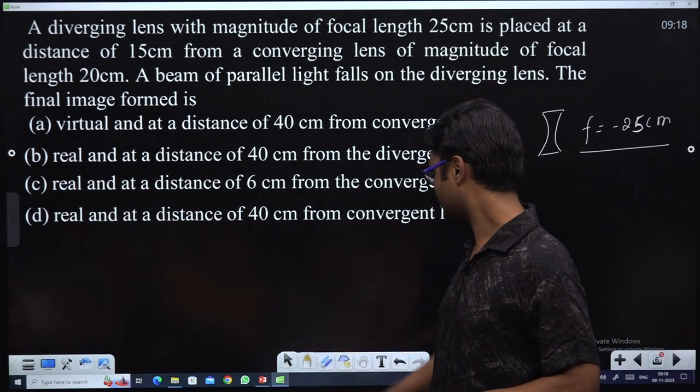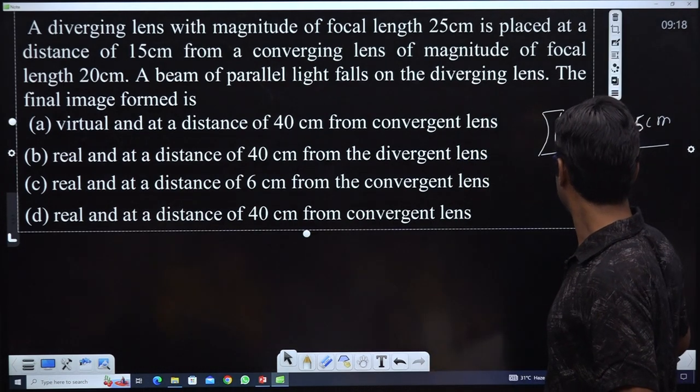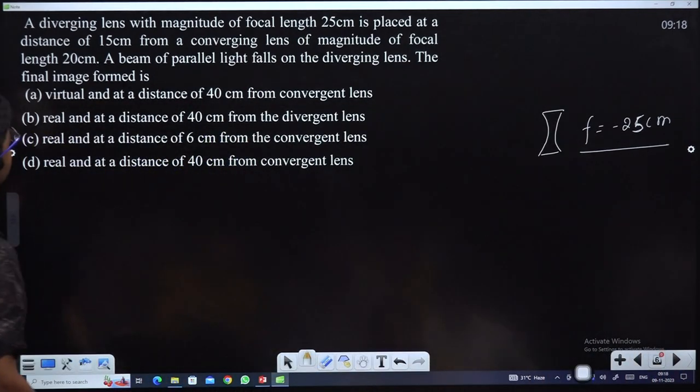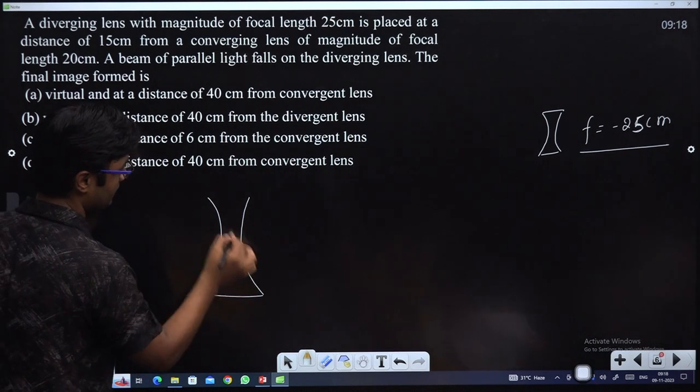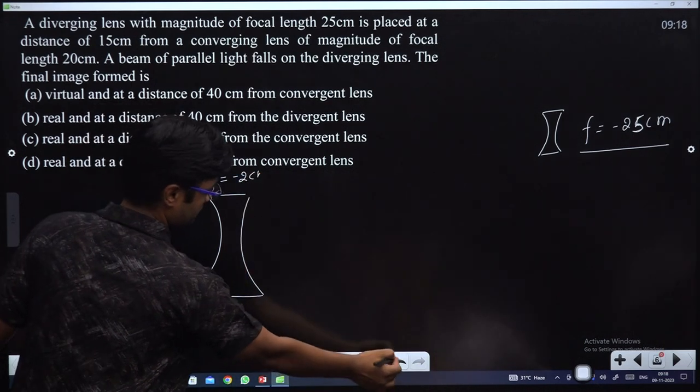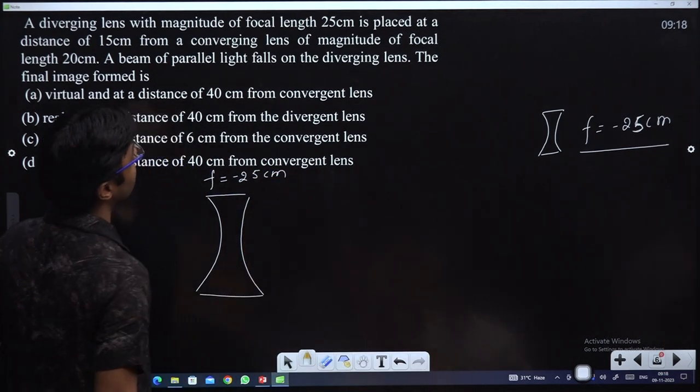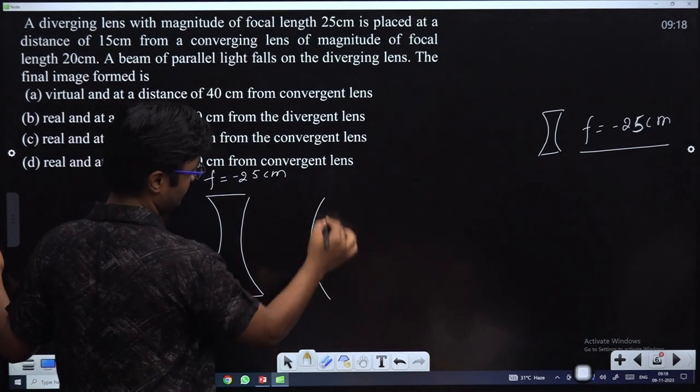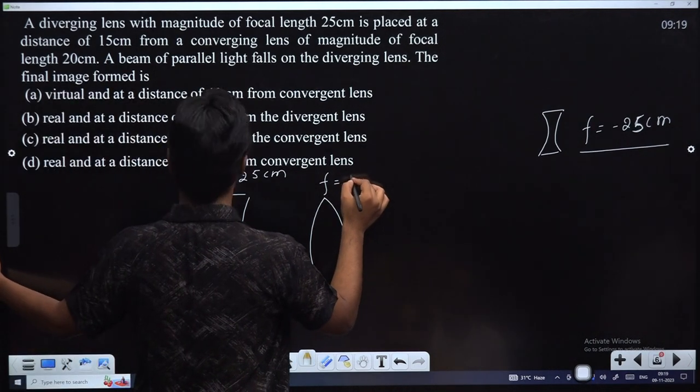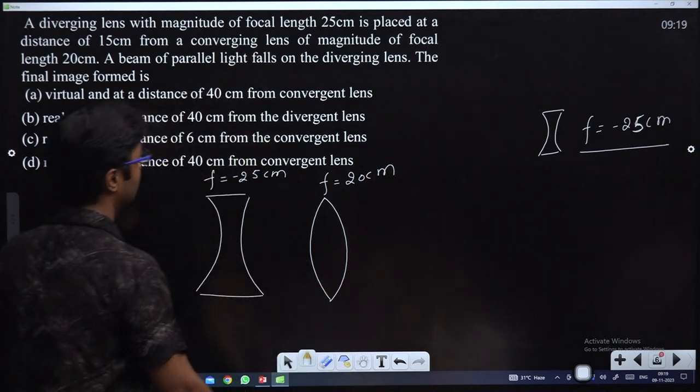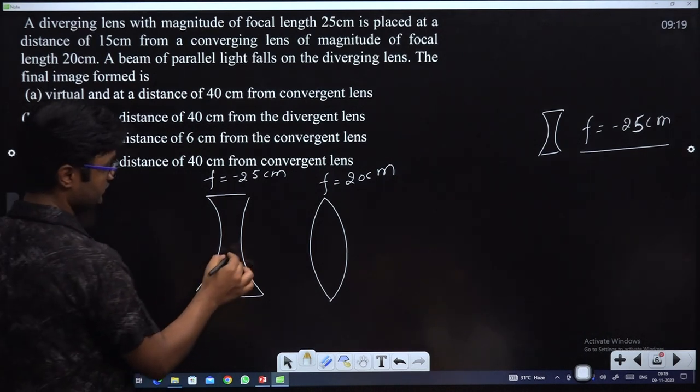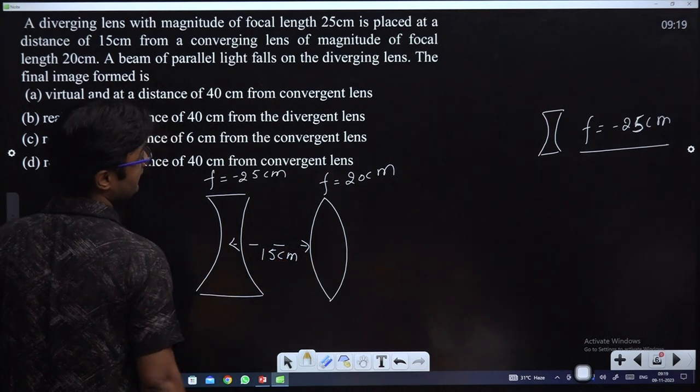Listen up. Here we have a diverging lens with focal length minus 25cm placed 15cm from a converging lens. The converging lens has focal length 20cm.